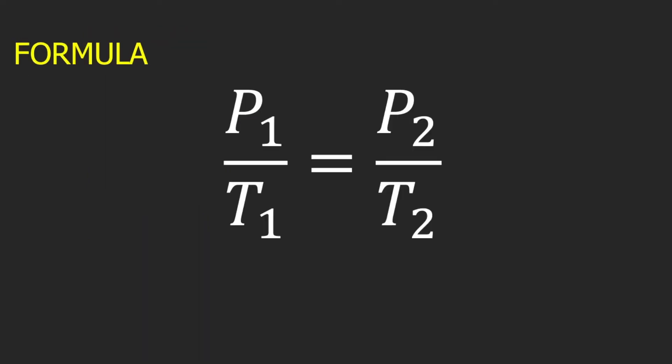Now let's proceed to the formula for Guy-Lussac's Law. The formula is very simple and easy to memorize. It's P1 divided by T1 equal to P2 divided by T2.